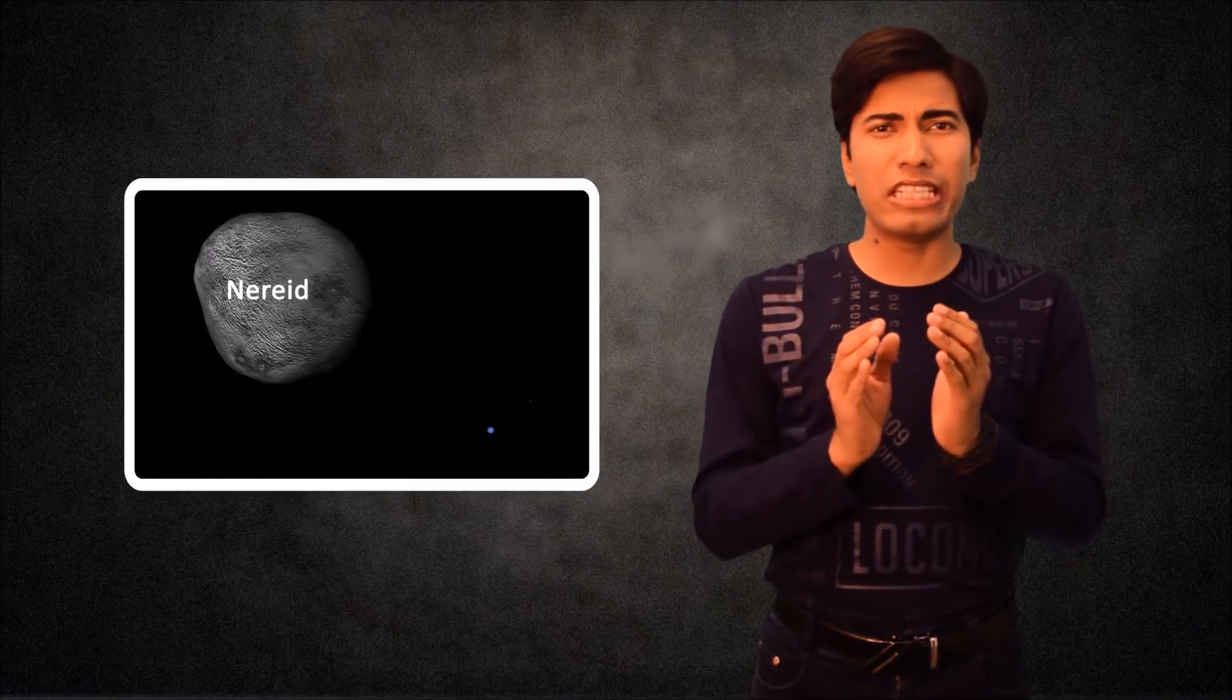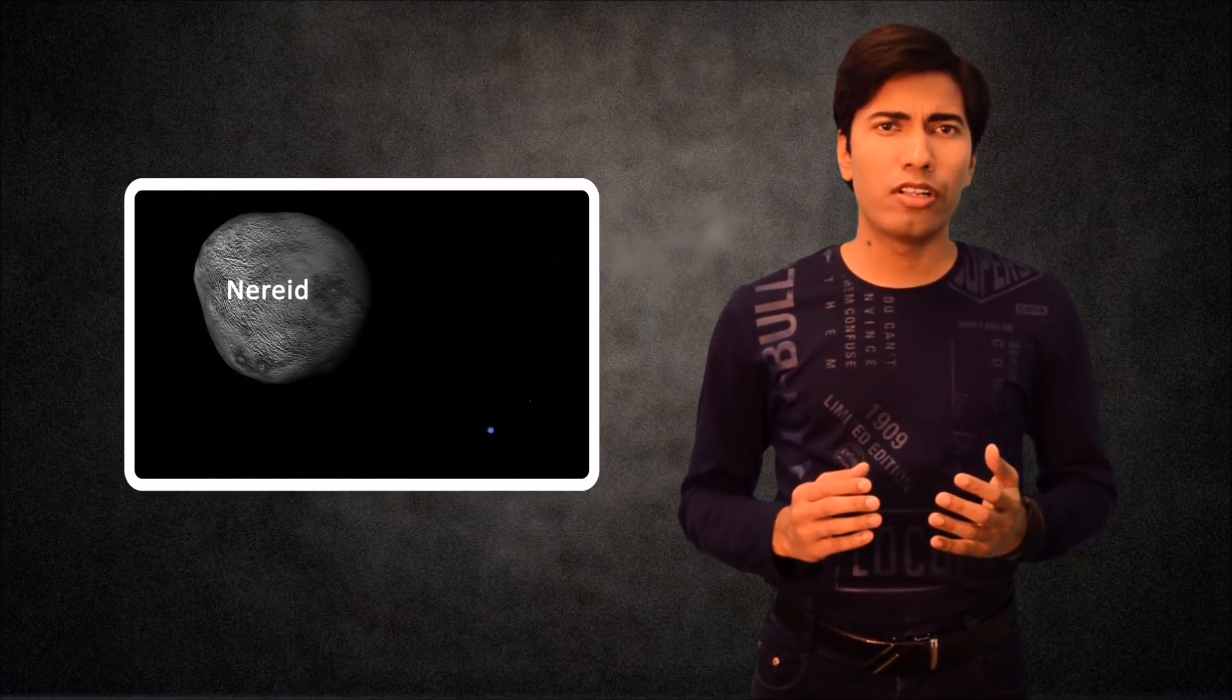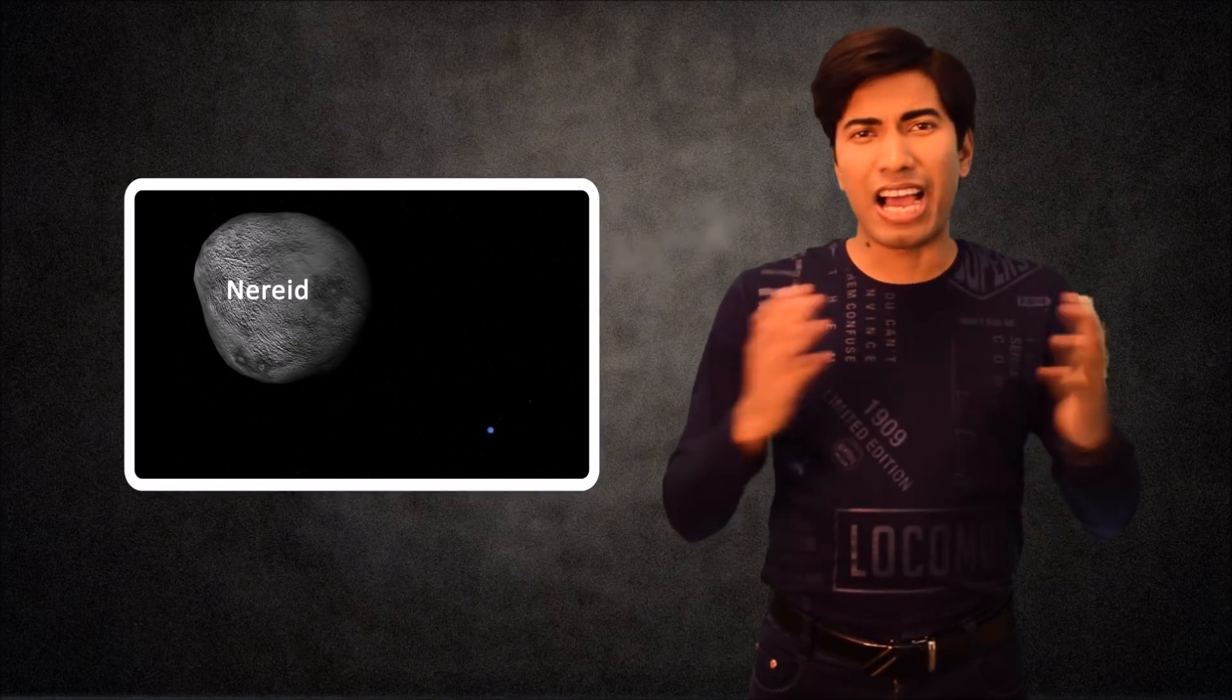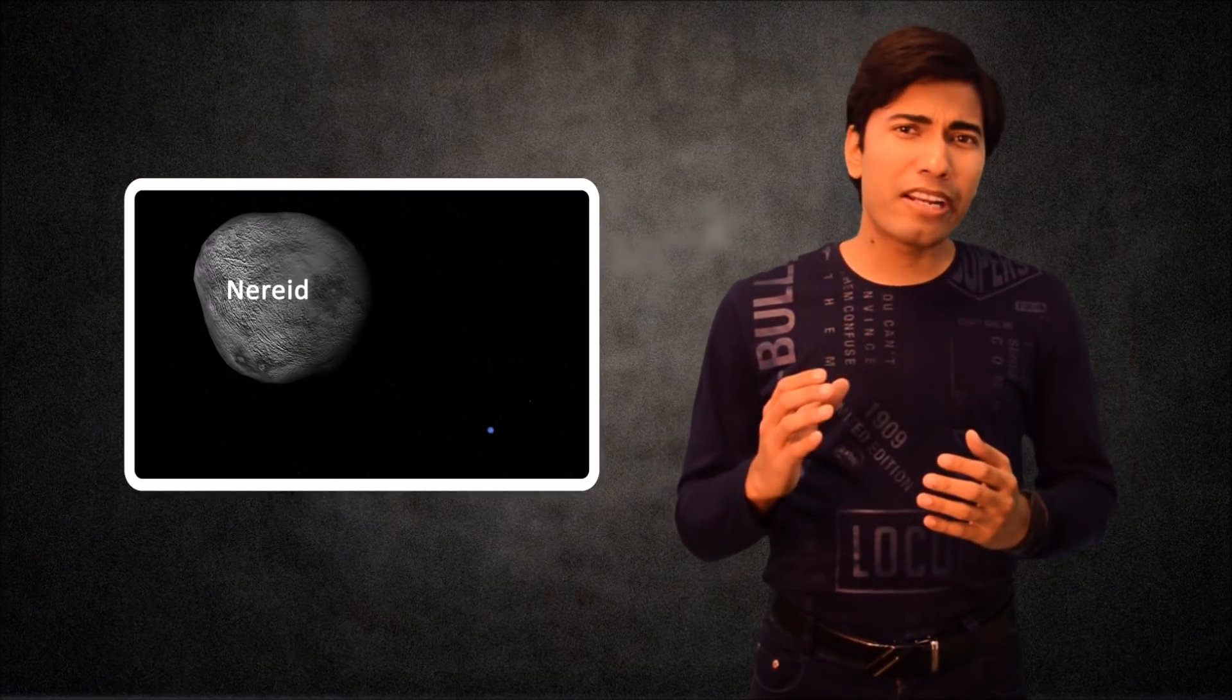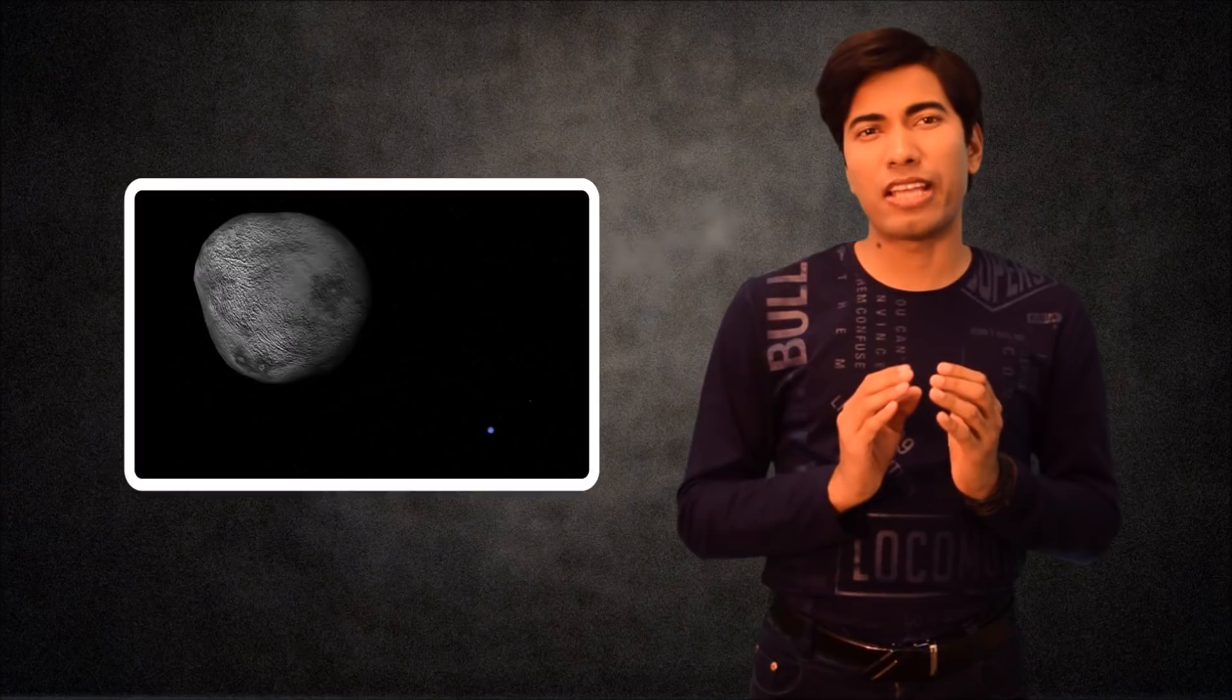Although the size of Neptune's Nereid is still not favorably known, when near the low point of its highly elongated orbit, it might cover up to 80% of the sun's diameter.